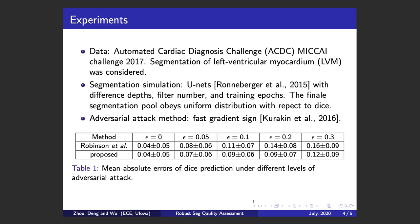We conducted experiments on the ACDC dataset, focusing on the segmentation of the left ventricular myocardium. Because we need to evaluate many different segmentations of varying qualities, we use a U-Net to simulate segmentations of different qualities, and we use the fast gradient sign method to perform adversarial attacks.